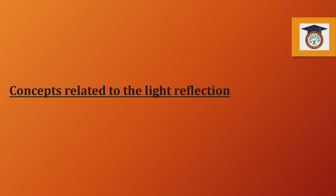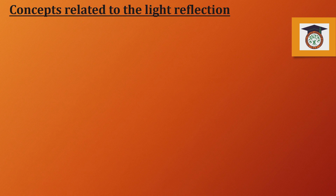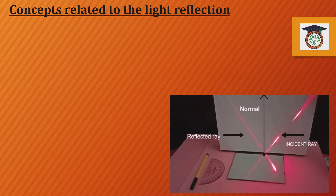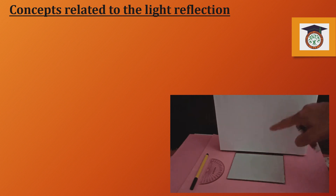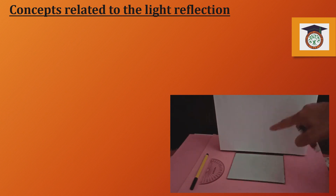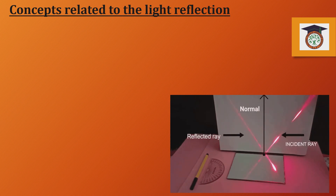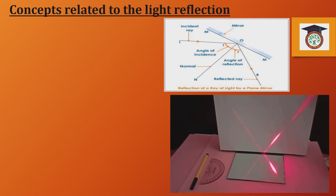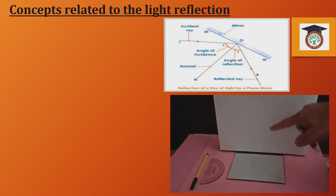Now we are going to talk about concepts related to light reflection. When light falls toward a mirror, it reflects. This is regular reflection. We have the incident light ray and the reflected light ray. If we draw a normal from the point of incidence, we have two angles: the angle of incidence and the angle of reflection.